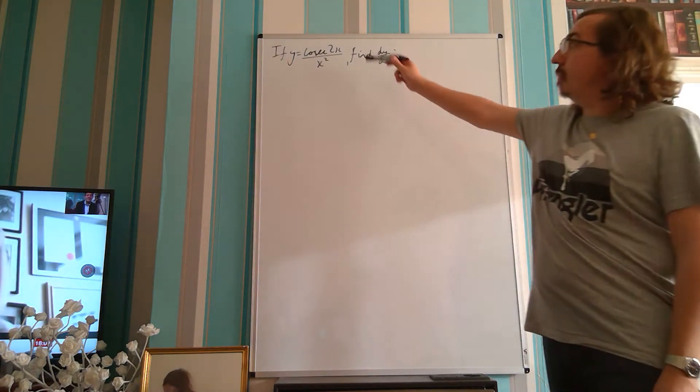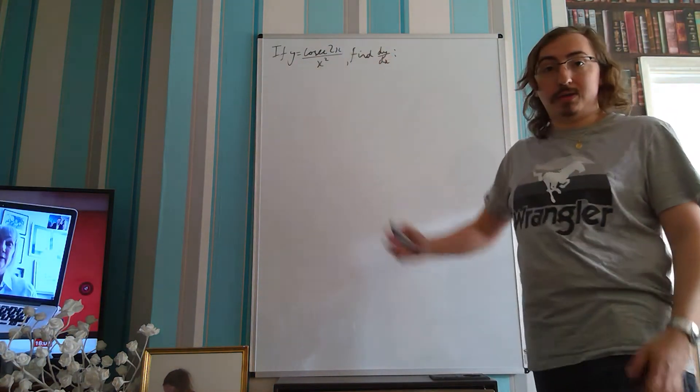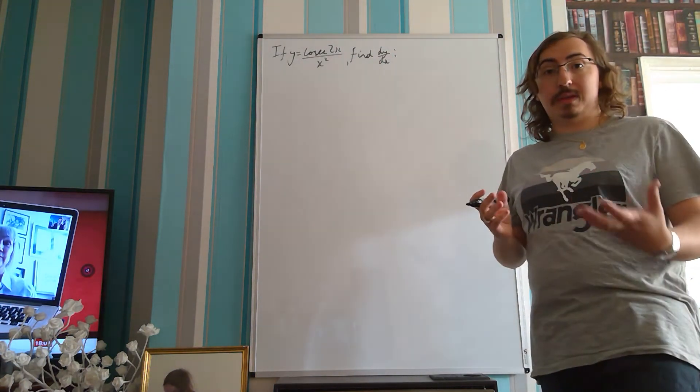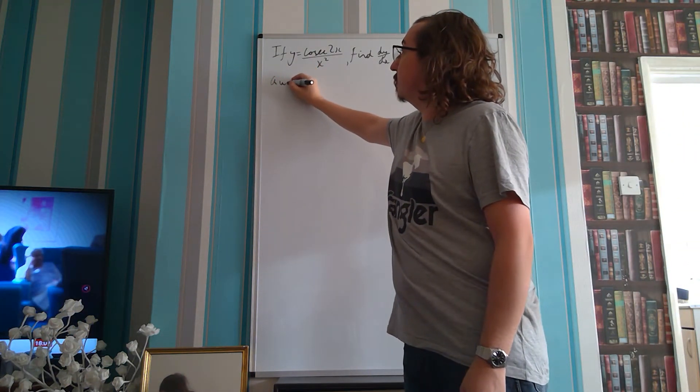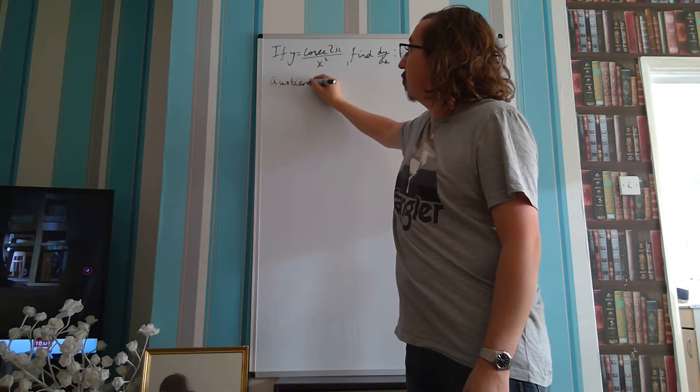So this is another one that we see is displayed as a fraction. Immediately we should be thinking, well, if I need to find dy by dx, I'm going to need to use the quotient rule.